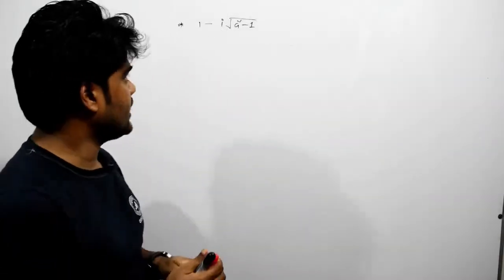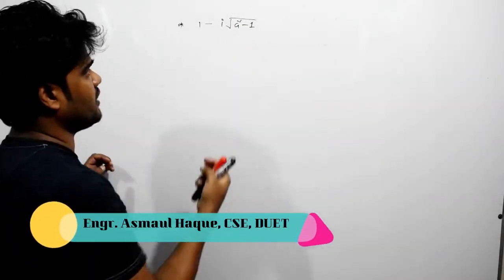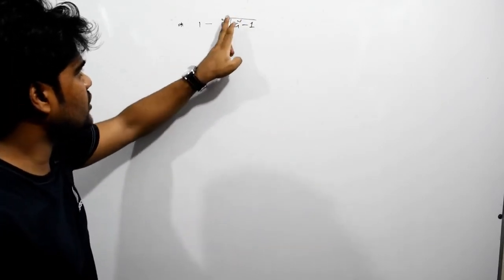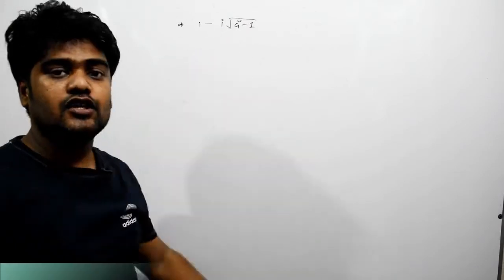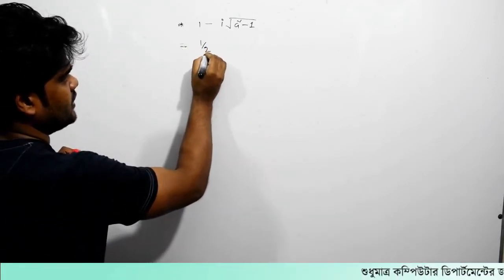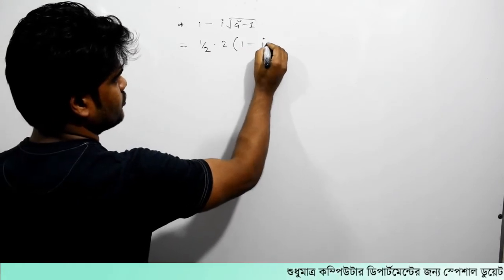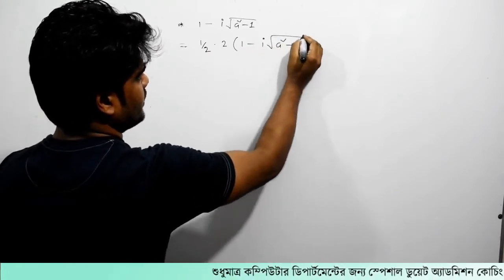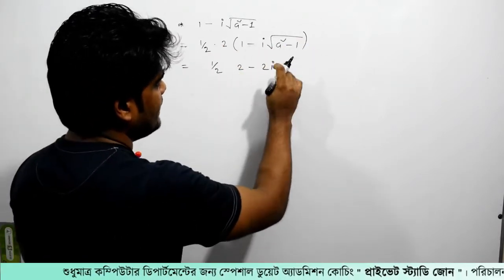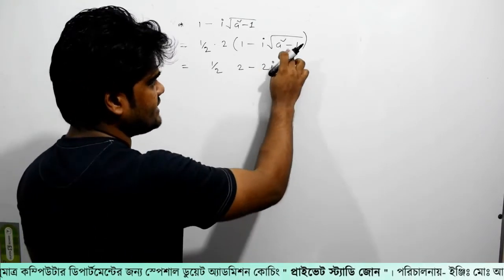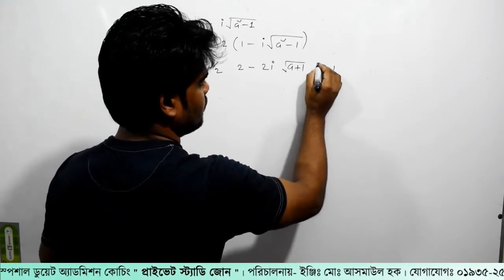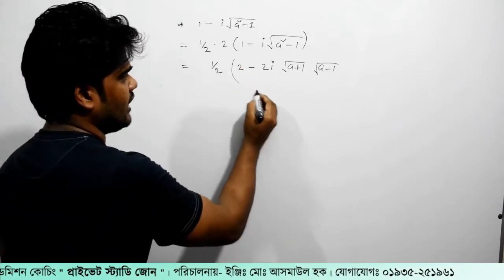We are going to solve the problem. Here 2 is a square minus 1, so now 2 minus a square minus i. What if we substitute a square minus b square? Which means a square minus b square.